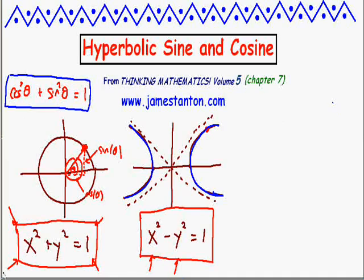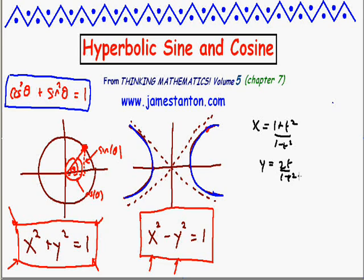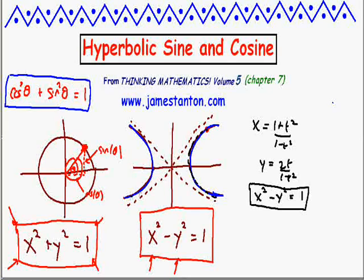Another possible parameterization comes completely out of the blue. People noticed that if you set x equal to (1 plus t-squared) over (1 minus t-squared) and y equal to 2t over (1 minus t-squared), sheer algebra grinding through shows that x-squared minus y-squared equals 1. So each value of t gives a different point on this hyperbola. By the way, this also shows that this hyperbola goes through infinitely many rational points — choose any rational t and you get rational x and y on the hyperbola.